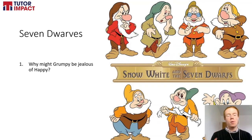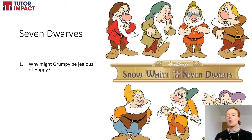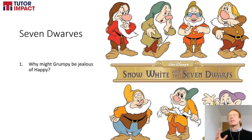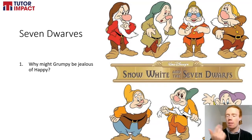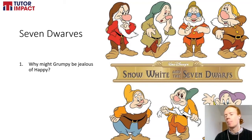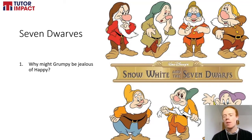Why might Grumpy be jealous of Happy? Pause the video and take time to discuss the answer, then come back. I think you can come up with quite obvious reasons here. Simply because feeling grumpy just isn't very nice — Grumpy is going to be moody, angry, snapping at people, and might not be very well liked. But Happy will always be positive, upbeat, and friendly. Grumpy might wish he felt good all the time, so he would be jealous or envious.